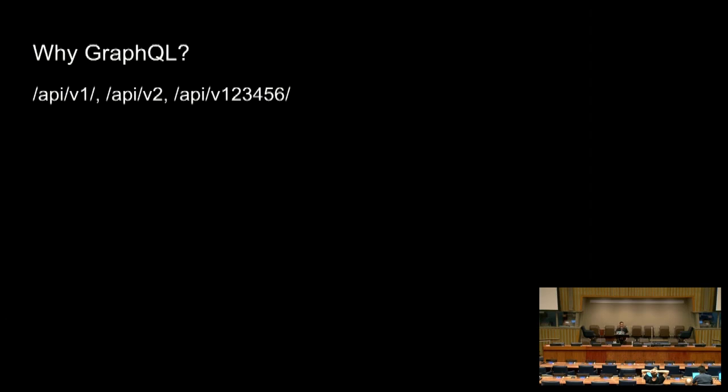Why GraphQL? We all are used to REST frameworks, and we are happy today with Ajax calls and transferring JSON, after years of XML and SOAP web services. But it's still not perfect. As time passed by, we see ourselves versioning our APIs with API V1, API V2, API V-whatever you call it. And it becomes hard to maintain. This is not a problem of Django or Django REST framework. This is just the way that REST is laid out.